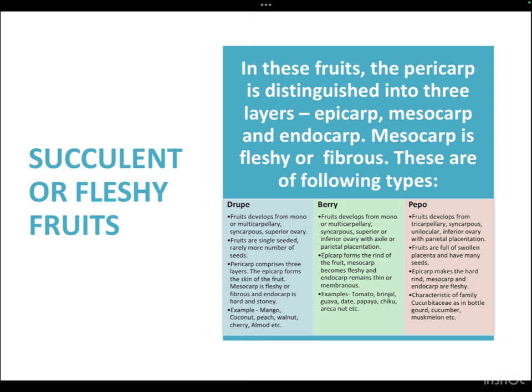Fleshy or succulent fruits have the pericarp well distinguished into three layers: epicarp (upper layer), mesocarp (middle layer), and endocarp (inner layer). The mesocarp can be fleshy or fibrous. The first type is the drupe: fruits developed from mono- or multicarpillary syncarpus superior ovary, usually single-seeded. The epicarp forms the skin or peel, the mesocarp is the flesh or pulp, and the endocarp is mostly hard or stony. The most prominent example is mango (Mangifera indica); others include coconut, peach, walnut, cherry, and almond.